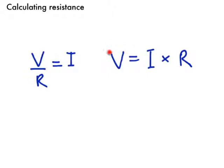You could also work out the potential difference if you knew the current and the resistance there. So you can rearrange that equation to calculate any one of those three, and that's going to come up a few times in this unit on electricity.